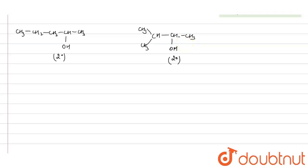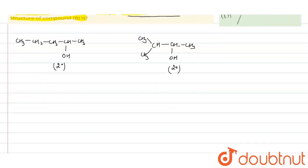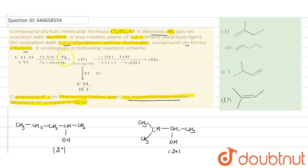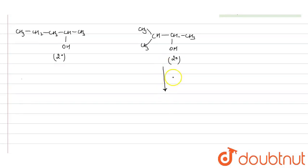Now, according to the question, compound C is forming six monochlorinated derivatives. Monochlorination reactions are given by alkanes. So if you remove the OH and attach H, it will form an alkane. Let's see the reaction of compound A with TsCl in the presence of pyridinium - a substitution reaction will take place.